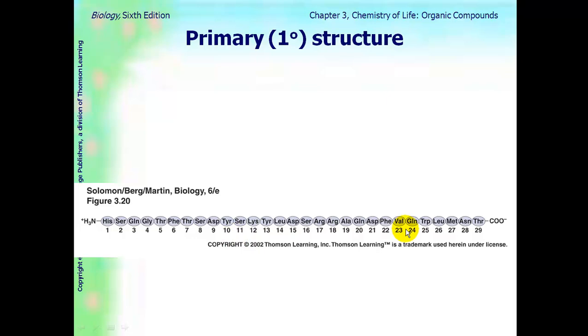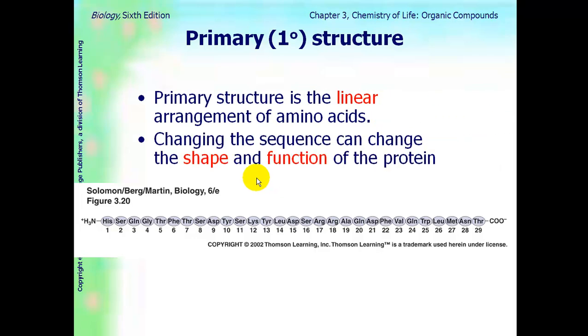This is a primary structure of a protein, and all it is is basically the linear sequence of the amino acids that are present in there. If you change, if you just take this asparagine out, it would change the shape of the protein and the function.